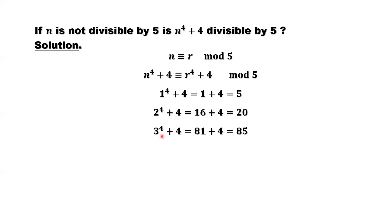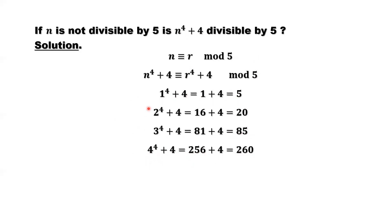Similarly, we can check 3 to the power of 4 plus 4, which is 85 — also divisible by 5. This is true. Now check the last possible remainder, r equals 4: 4 to the power of 4 plus 4 equals 256 plus 4, which is 260. 260 is divisible by 5. So we have considered all 4 possible situations for r equals 1, 2, 3, 4. All numbers are divisible by 5.